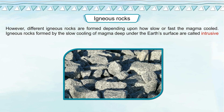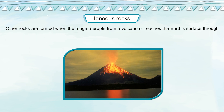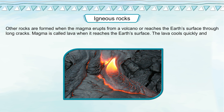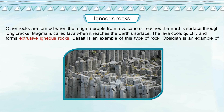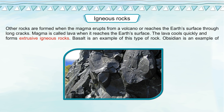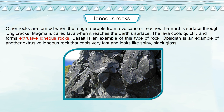Igneous rocks formed by the slow cooling of magma deep under the earth's surface are called intrusive igneous rock. Other rocks are formed when the magma erupts from a volcano or reaches the earth's surface through long cracks. Magma is called lava when it reaches the earth's surface. The lava cools quickly and forms extrusive igneous rocks. Basalt is an example of this type, and obsidian is another extrusive igneous rock that cools very fast and looks like shiny black glass.